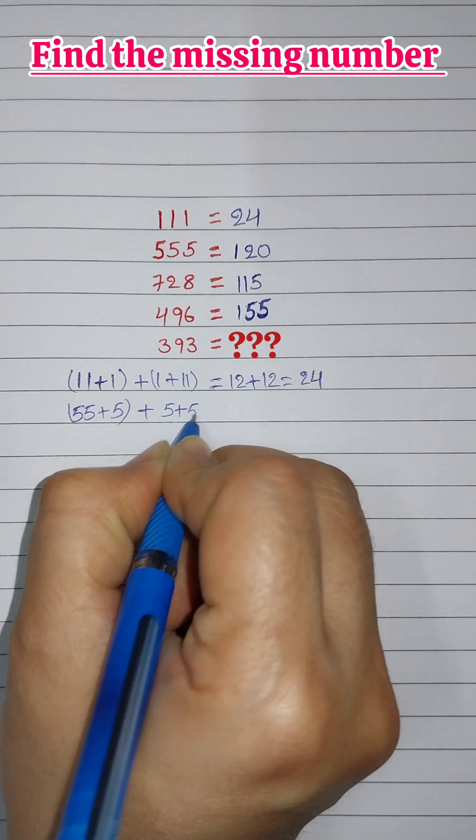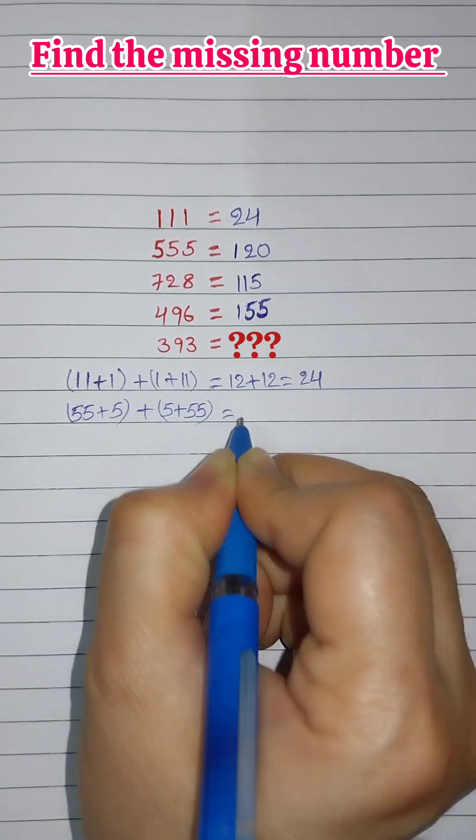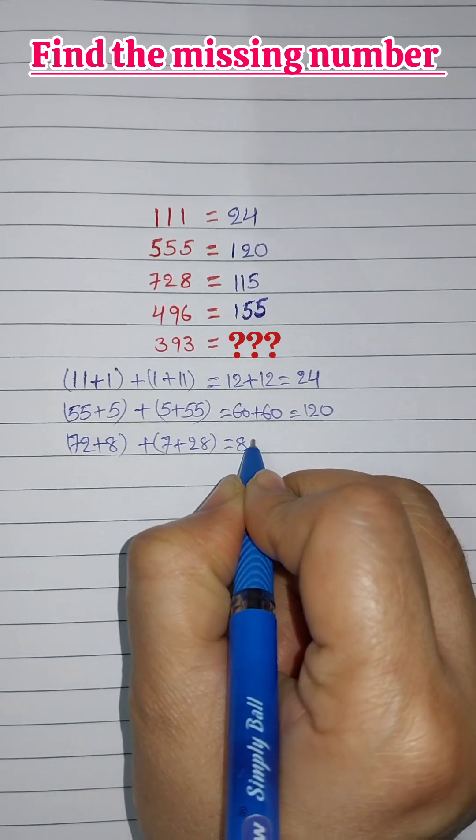For 555, 55 plus 5 plus 5 plus 5 plus 55 equals 60 plus 60 equals 120.